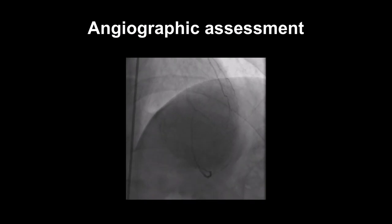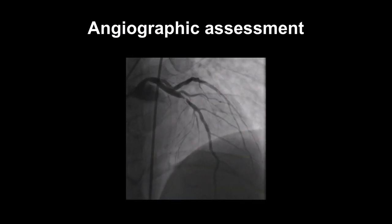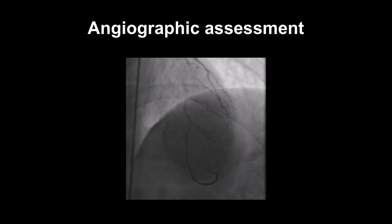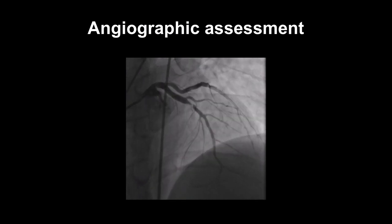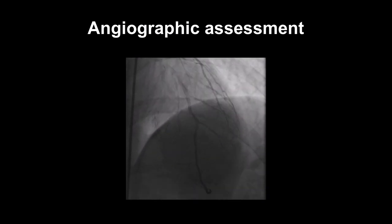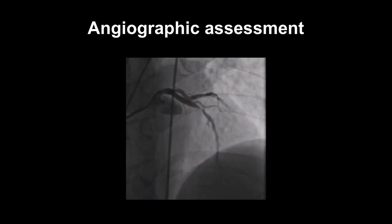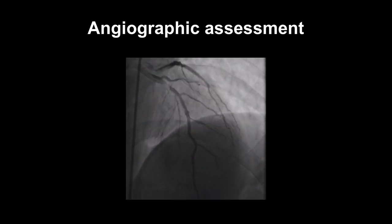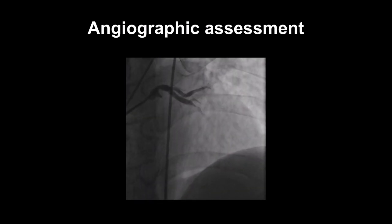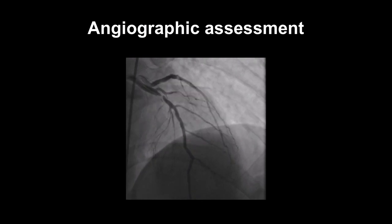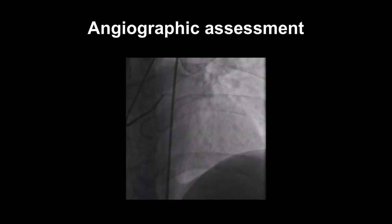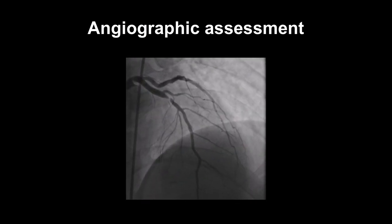Assessment of lesion severity is often very subjective when evaluated by clinicians performing angiography. We often tend to eyeball the severity of the stenosis. This is usually reasonably accurate if the lesion is severe, as in the example shown, but tends to get more subjective as the stenosis becomes less severe in the mild to moderate range.